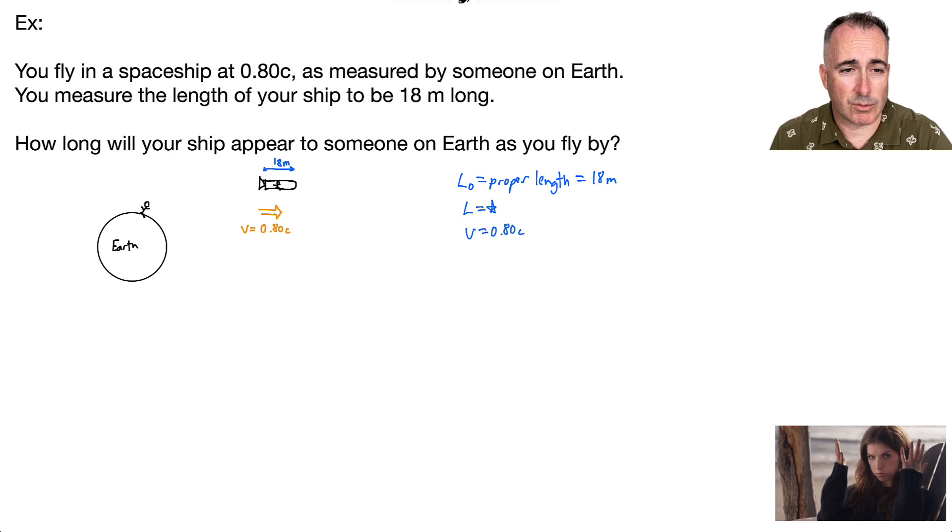So let's use this calculation. L equals L0 over gamma. I usually like to calculate gamma first. So gamma equals 1 over square root of 1 minus v squared over c squared. That's going to be 1 over 1 minus 0.8c squared over c squared, square root. That's 1 over 1 minus 0.64 c squared over c squared. The c squareds cancel out.